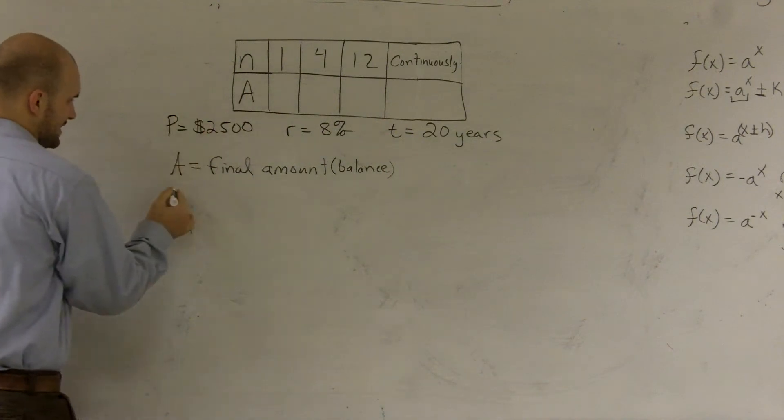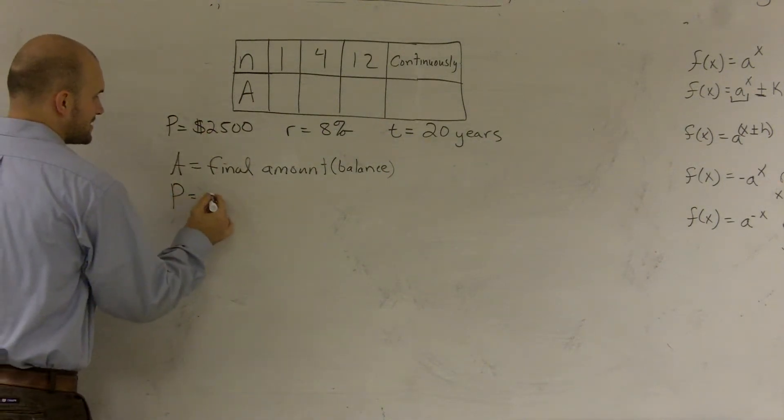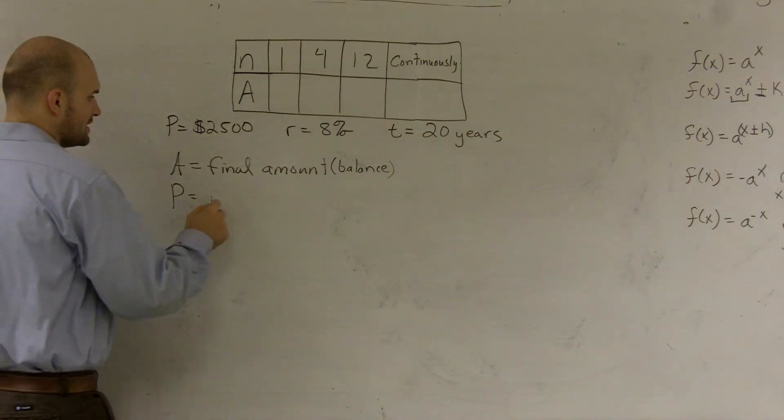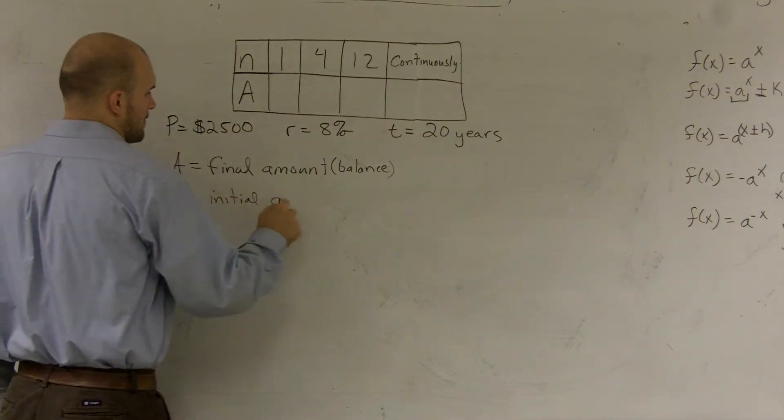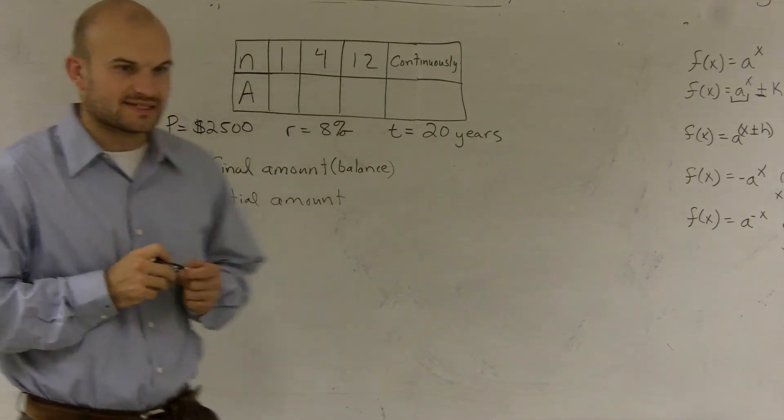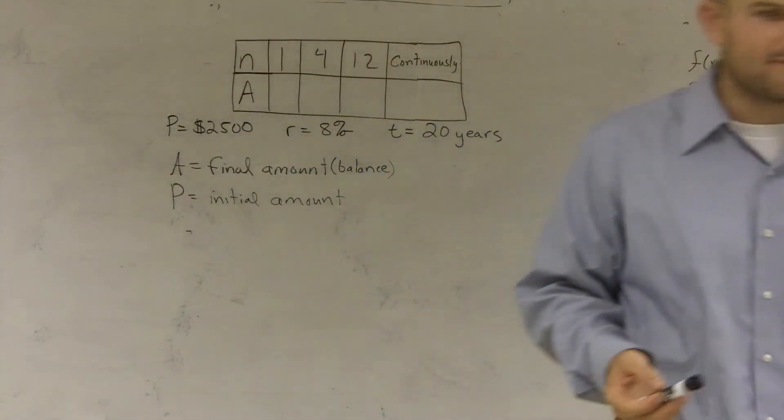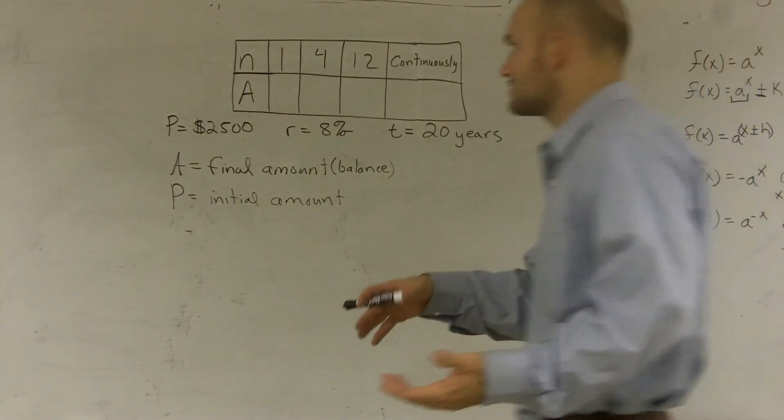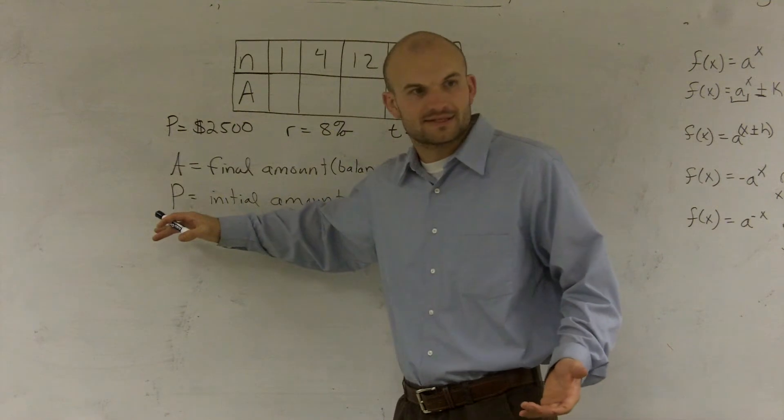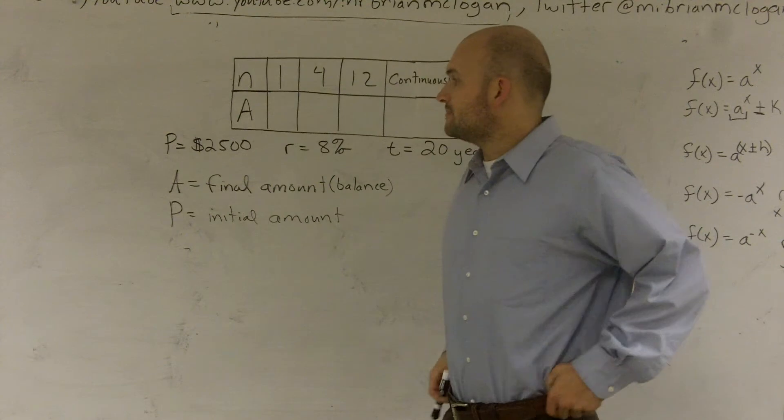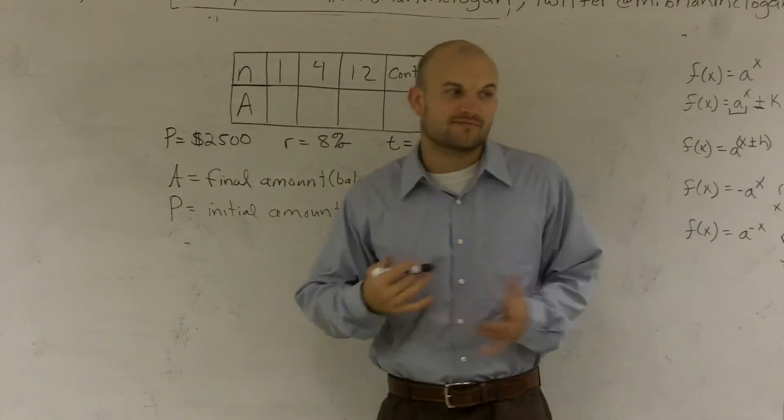So they say P equals $2,500. Well, what does P represent? Well, P is going to represent your initial amount. So going back to the example I previously said, if you are going to invest $500, $500 would be your P in this example. However, for this example, they just said you're going to invest, the number of dollars invested is going to be $2,500.